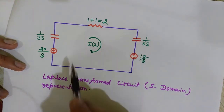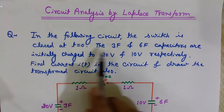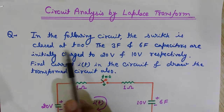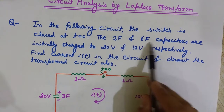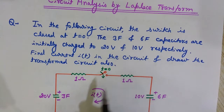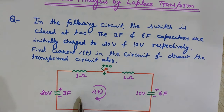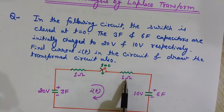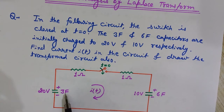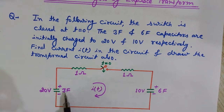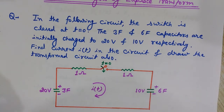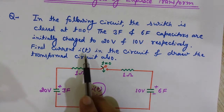Now we will see the problem. In the following circuit, the switch is closed at t equals zero. The three farad and six farad capacitors are charged to 20 volts and 10 volts respectively. We have two resistors of one ohm each. The three farad capacitor has an initial charge of 20 volts and the six farad capacitor has an initial voltage of 10 volts.